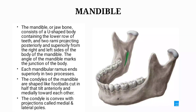The distal articulating surface is the mandible. Each mandibular ramus ends superiorly in two processes. The condyles of the mandible are shaped like a football cut in half, tilting anteriorly and medially towards each other. The condyle is convex with projections called medial and lateral poles.